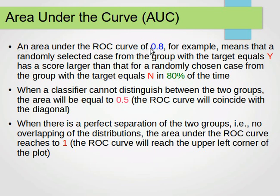An area under the curve of 0.8, for example, means that a randomly selected case from the group with the target equals yes, has a score larger than that for a randomly chosen case from the group with the target equals no in 80% of the time. So, 80% of the time, when we randomly choose a case from the group, the predicted value of that case will be yes in 80% of the time.